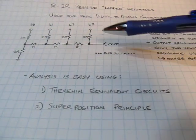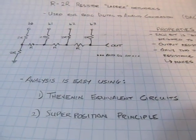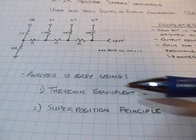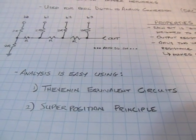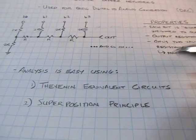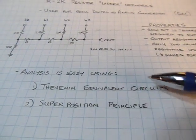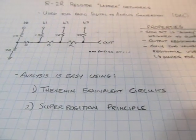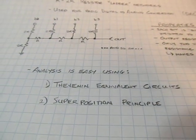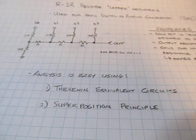So it turns out that the analysis, which looks like it might be crazy with math, is actually pretty easy when you consider using two principles, the Thevenin equivalent circuits and superposition. So we use the Thevenin equivalent circuits to kind of figure out and break the circuit down into some simple elements. And then when we go to calculate values, we use superposition. So let's walk through.